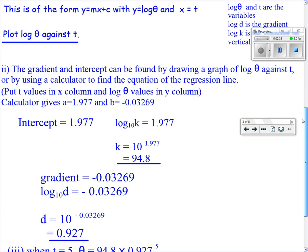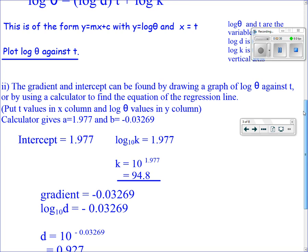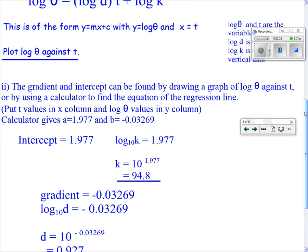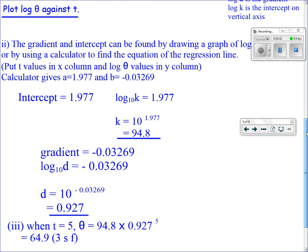The gradient is log₁₀ d, so d = 10^(-0.03269) = 0.927. And we can work out what d is.